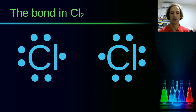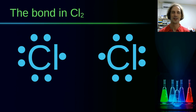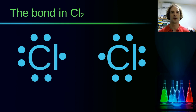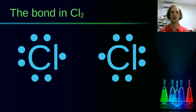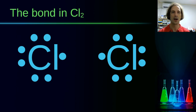We already know from Avogadro's work — roughly 60-70 years before Lewis — that many elements which are gases at room temperature are actually in diatomic molecules. For example, chlorine exists as Cl2, a chlorine molecule with two chlorine atoms, and using Lewis's theory we can explain how these molecules are created.